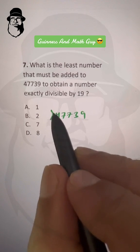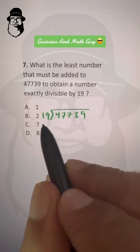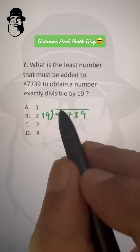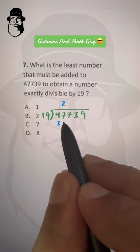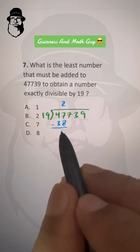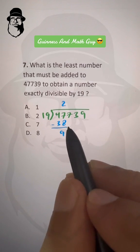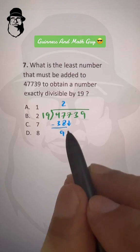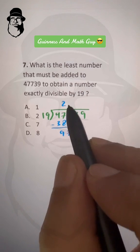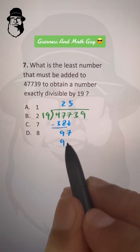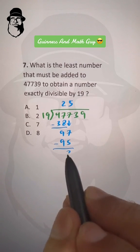39 divided by 19. Now, 19 times 2 is 38, and we have 9 remainder here. Then we bring this down, 97. 19 times 5 is 95, and we have 2 here.